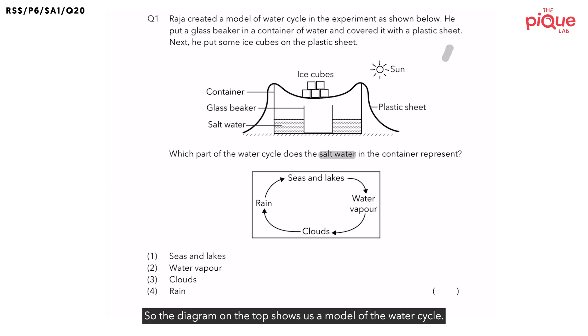So the diagram on the top shows us a model of the water cycle. So in order to understand how this model works, we first have to understand how does the water cycle work. Let's focus on the diagram at the bottom.